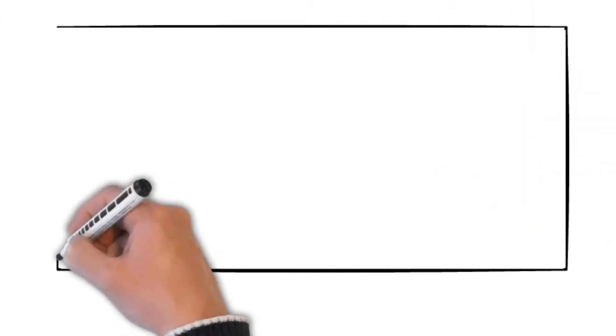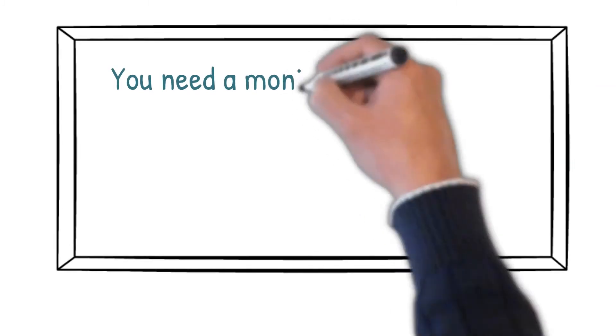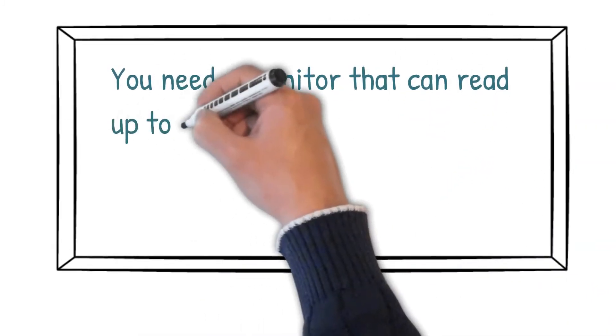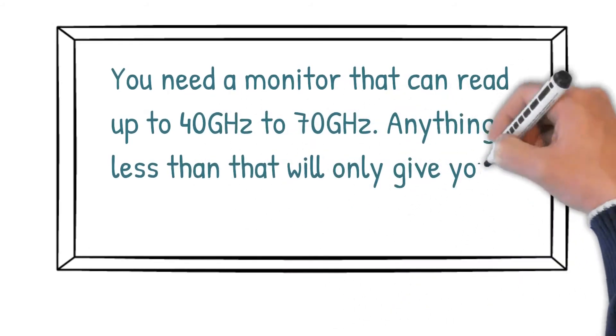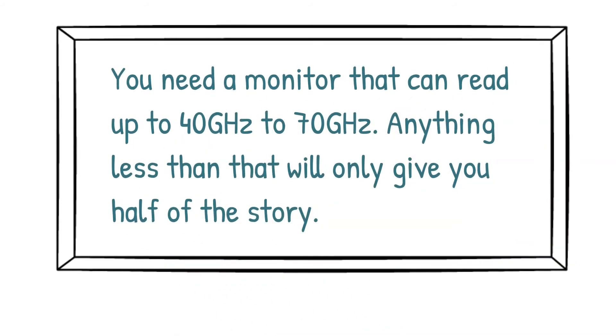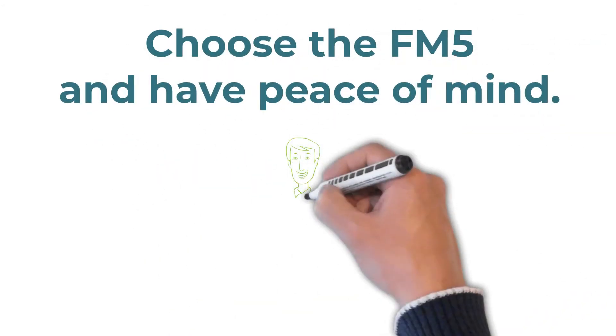So to recap, if we want to be sure that there's no high frequency radiation in our home, school, or office environment, we need a monitor that today will read 40 gigahertz and has the potential to read 70. Anything less than 20 will only give you half the story. Choose the FM5 and have peace of mind.